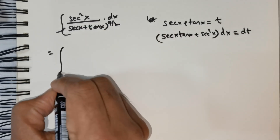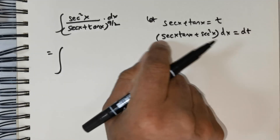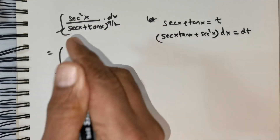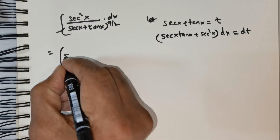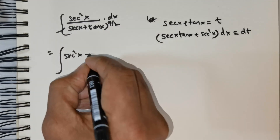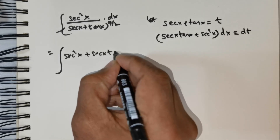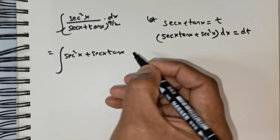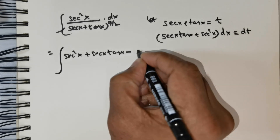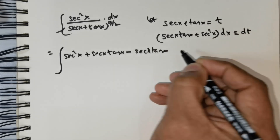Now take this and substitute it into the integral. We can clearly see that we need to have secant x tan x, but we only have secant squared x. So what I am going to do is create what I do not have — I am going to add secant x tan x and then take away secant x tan x.